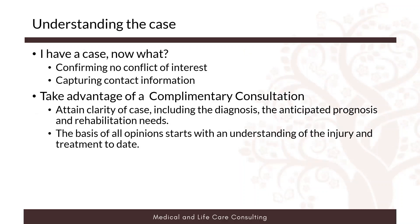So you have a case — now what do you do? The first step is to call your life care planner and confirm there is no conflict of interest. We want to hear a brief explanation of what the case is about — whether it's a pediatric, neonatal, or adult case — and then find out who opposing counsel is to confirm there's no conflict. We collect contact information immediately and identify what product you're going to need. Once we've confirmed no conflict of interest, the nurse speaks with the attorney regarding the specific diagnosis, anticipated prognosis, and rehabilitation needs, as the basis of all our opinions starts with an understanding of the injury and treatment to date.